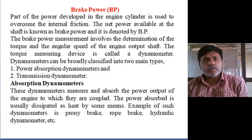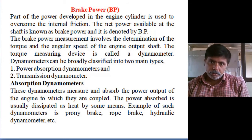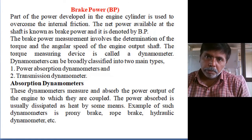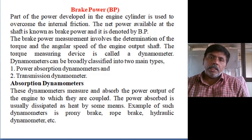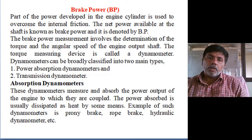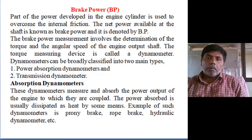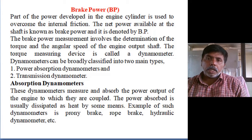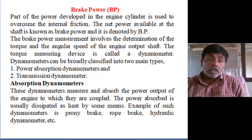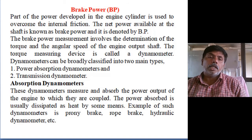Brake power is denoted by BP. We can measure brake power by measuring torque and angular speed. Angular speed can be measured by a tachometer — contact or non-contact type. Torque can be measured by using dynamometers. The device used to measure torque is called a dynamometer.